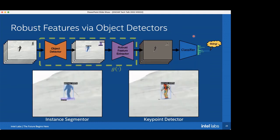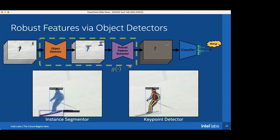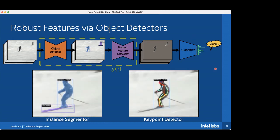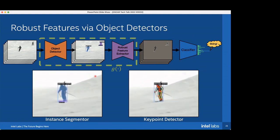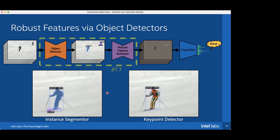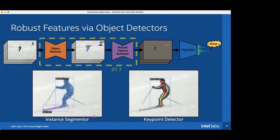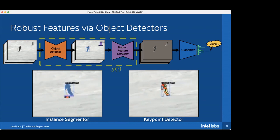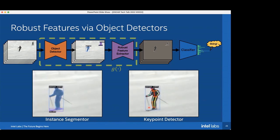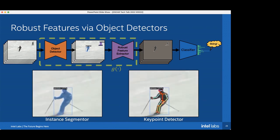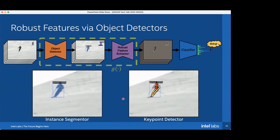Our idea is to extract features from the input that we think are discriminative for the task. Going back to UCF-101, we can take an instance segmentation network — a type of object detector — and extract semantic masks. Or we can use an object detector that extracts key points. Even with just key points, you could probably discriminate what class this is — you can tell that's skiing. A model could easily discriminate 'this is a person skiing' from the skeleton and ski labels.